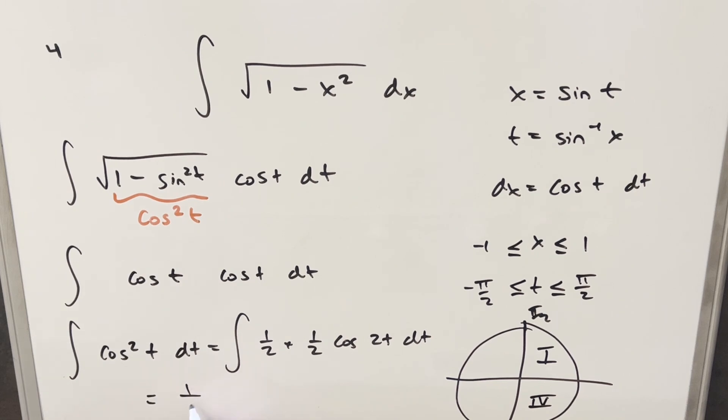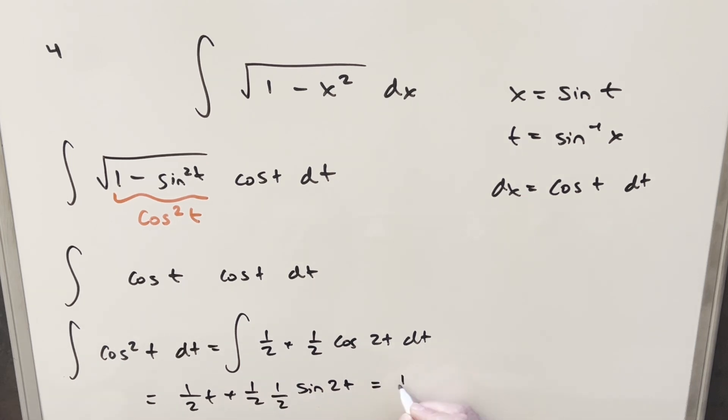We'll go ahead and integrate. We end up with 1 half t plus 1 half integral of cosine t is sine 2t. But we need to consider the 2 and put it in the denominator as 1 half. But then I can just rewrite this. 1 half times 1 half, I can write this as 1 over 4.